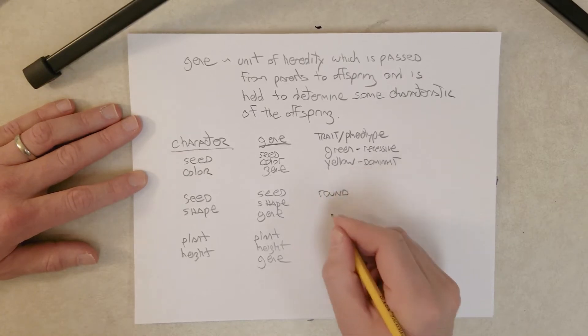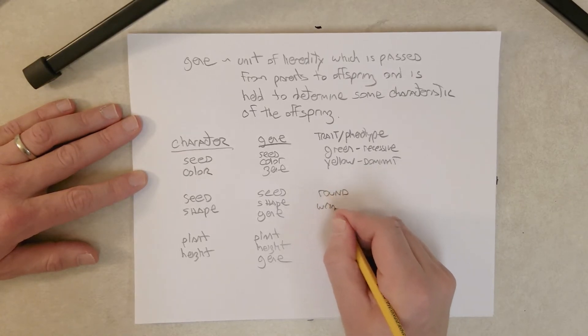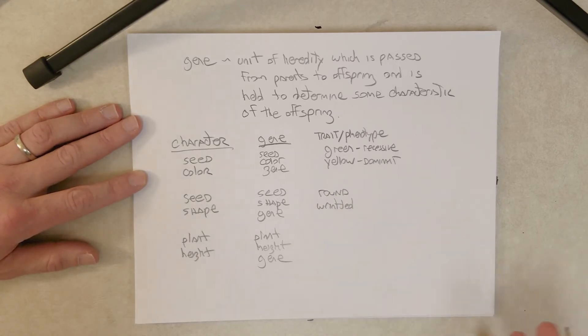And there will be a way you can figure these out when we look at the results of the cross, which we'll be able to see which is recessive and which is dominant by looking at the results of the cross.